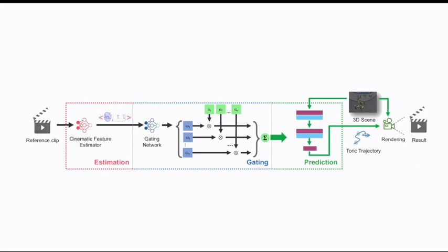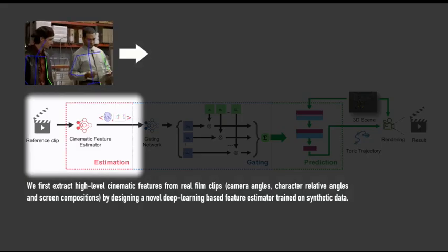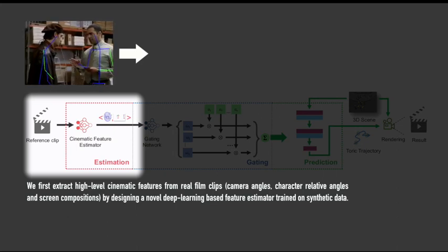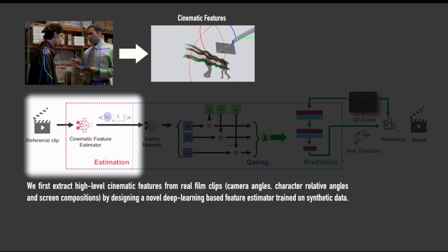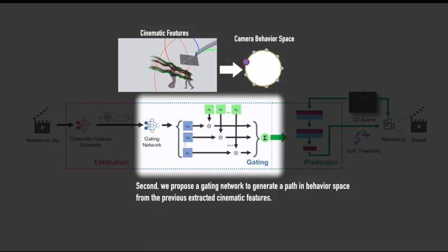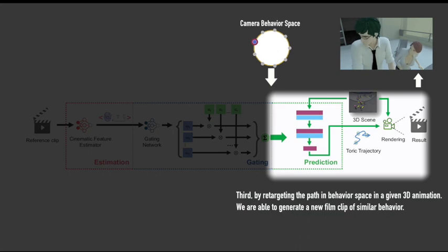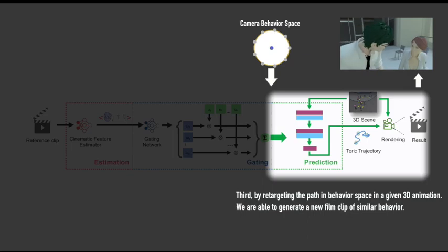Our system works as follows. We first design a cinematic feature estimator using a deep learning network, which is capable of automatically extracting high-level cinematic features from images, such as camera angles, 3D distances, layout of characters, and relative character configurations. Then, temporal sequences of cinematic features can be fed into a gating network, which is able to recognize the behaviors of the camera in a latent space representation — the camera behavior space. Finally, given a trajectory in the behavior space, we use a prediction network to compute the sequence of camera poses given a known 3D character animation.